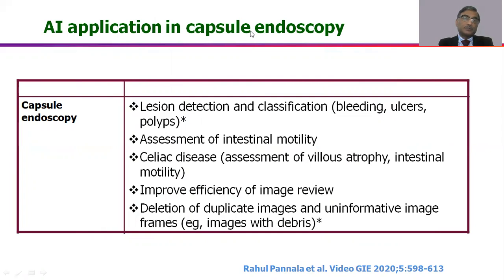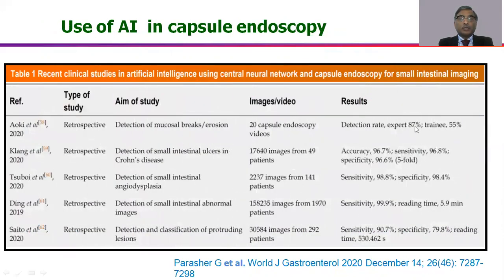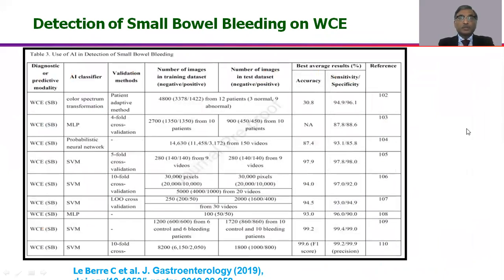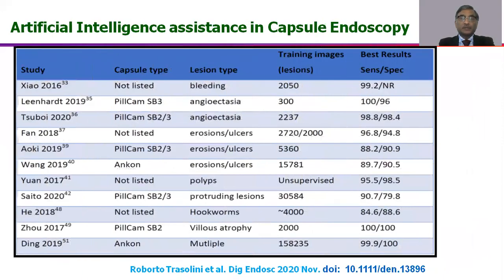AI has found wide application in capsule endoscopy for detection of lesions, assessment of motility, improving image view, and assisting the operator by deleting duplicate and uninformative images. Systems are already available that automatically detect lesions and blood with good sensitivity and specificity. Detection of small bowel bleeding, angiodysplasia, villous atrophy in celiac disease, and multiple other lesions have been studied, all achieving high sensitivity and specificity with AI-enabled software.